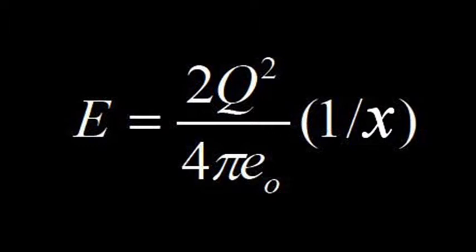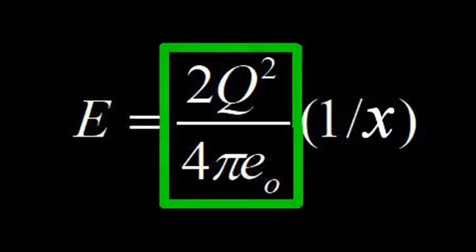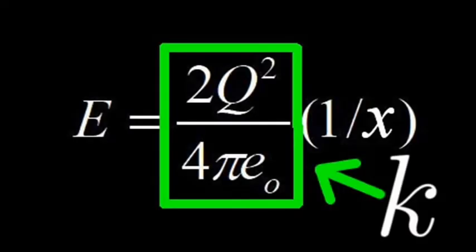This equation tells you the energy produced by two interacting charges. That whole fractional part of the equation, 2q²/(4πε₀), can be combined into what's called an aggregate constant k, which is the spring constant that was spoken of a minute ago.